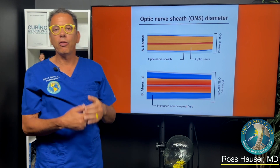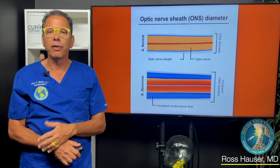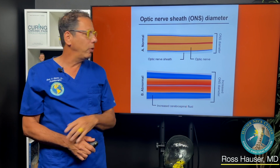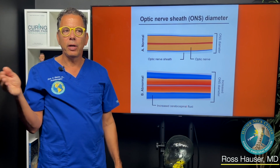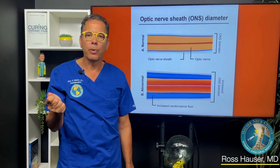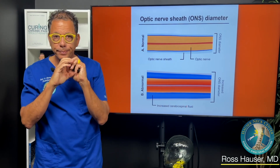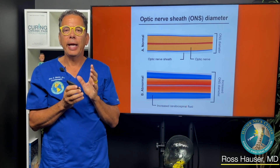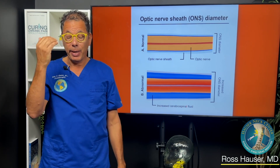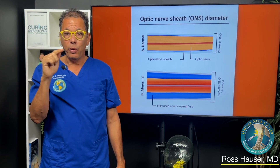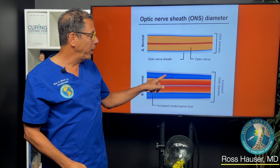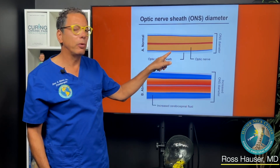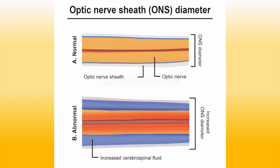So how do we determine whether it's a cerebral spinal fluid leak, a cerebral spinal fluid block, or a jugular vein block? One of the ways we do it is by measuring the optic nerve sheath diameter. When you have a CSF block or internal jugular vein compression, cerebral spinal fluid accumulates around the optic nerve, which we can document by ocular ultrasound. When you have a cerebral spinal fluid leak, the fluid is leaking out, so you would have a decrease of cerebral spinal fluid around the optic nerve.